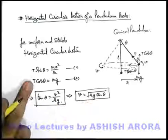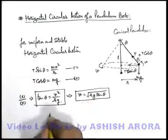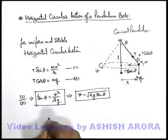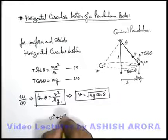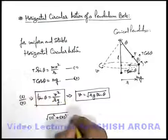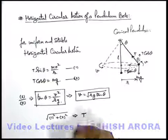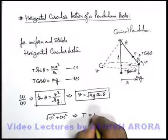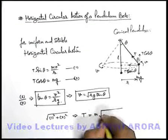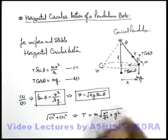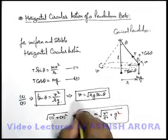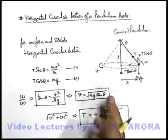If we are required to find the value of tension, you can square and add this equation and take the root of that. Like if we take one square plus two square root, on left hand side you can see we are getting only tension. On right hand side it'll be m into root of v four by r square plus g square. This is the relation which is giving us the tension in string of this conical pendulum.